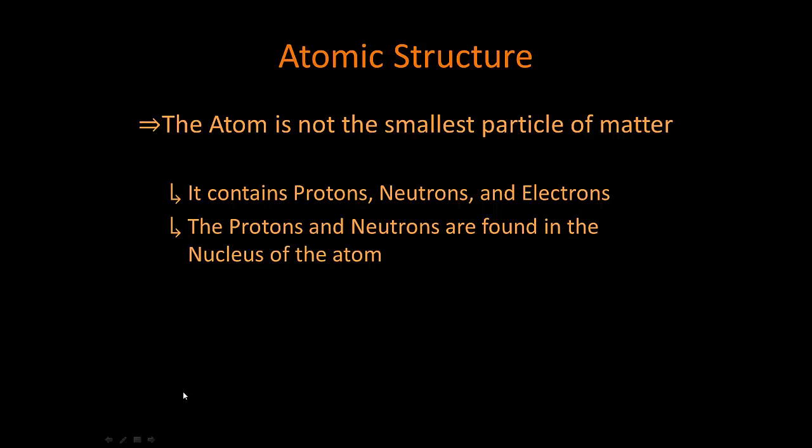So protons and neutrons both are found in the nucleus of the atom. The nucleus is actually what Rutherford's experiment found. The nucleus contains most of the mass, but it's tiny. It's very, very small. If an atom was the size of a baseball stadium, then the nucleus would be like a baseball in the middle of the stadium, and the electrons would be out in the bleachers.